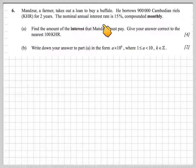Manzoor, a farmer, takes out a loan to buy a buffalo. He borrows 900,000 Cambodian riels (KHR) for two years.